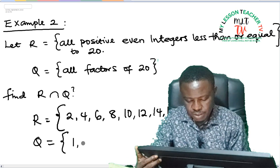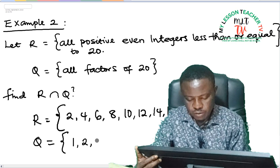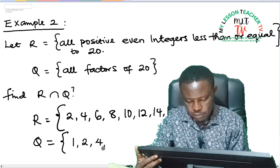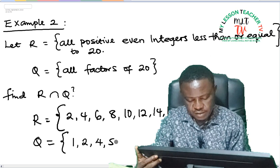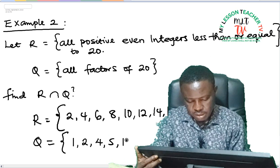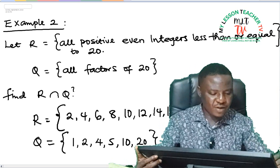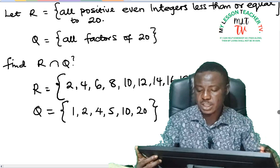2 is also a factor. So 4 is a factor, 5 is a factor, 10 and 20 itself. So these are the factors of 20.